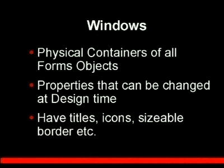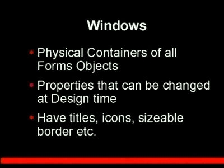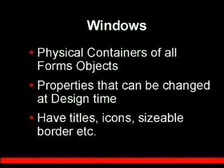Windows are the basic physical container of all the form objects. You could think of this as the frame of a painting. There are properties that can be changed at design time, and windows also have titles and icons, and they have sizable borders. Remember that after you listen to this lecture, you'll go and watch the demonstration, where I'll actually show you some of these different components of the form and you'll get a better understanding of what they are.